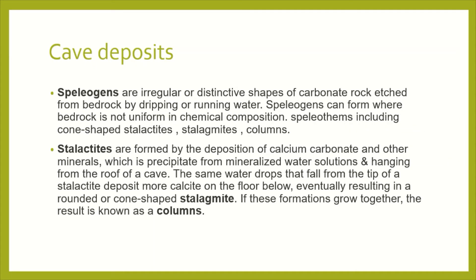Now we are going to discuss cave deposits — speleothems. These are formed where bedrock is not uniform in chemical composition. They include stalactites, stalagmites, and columns. Stalactites are formed by deposition of calcium carbonate and other minerals precipitated from mineralized water solution, hanging from the roof of the cave. The same water drops that fall from the tip of the stalactite deposit more calcite on the floor, which is known as a stalagmite. If these formations grow together, they are known as columns.